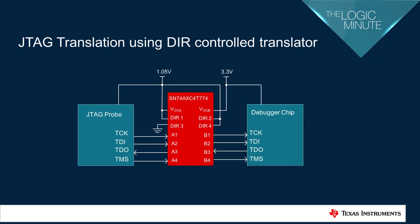JTAG level shifting can be accomplished by using a direction control level translation device like the AXE family. With its four independent direction pins controlling the direction of each of its four channels, the SN74AXC4T774 device enables low voltage translation between the JTAG probe and the debugger chip.